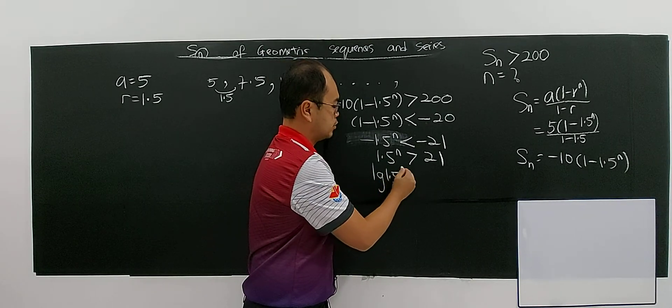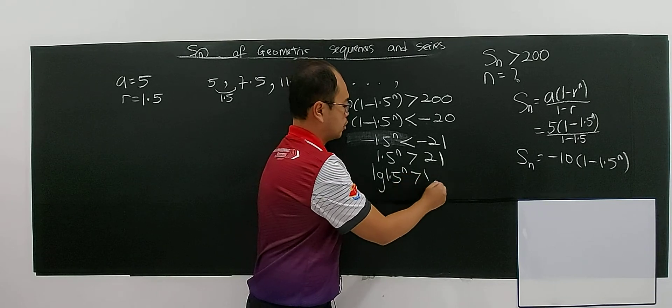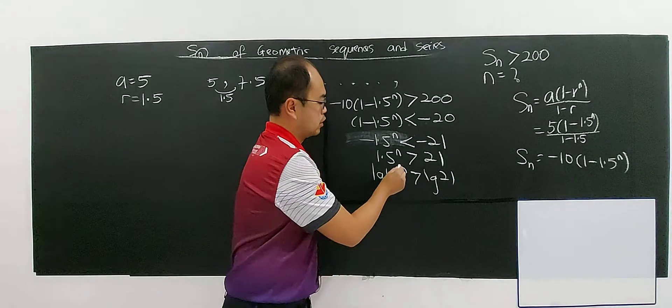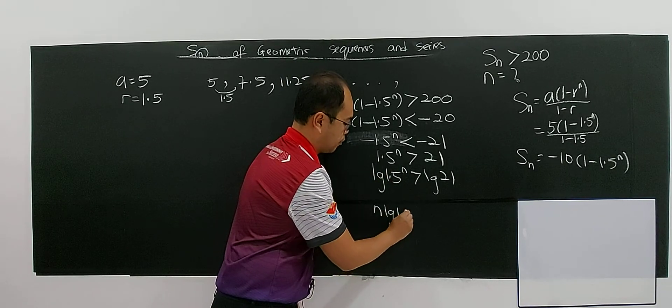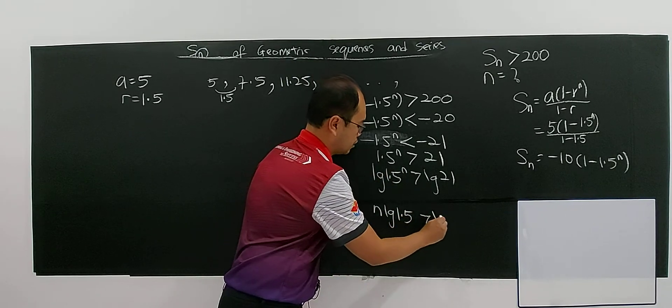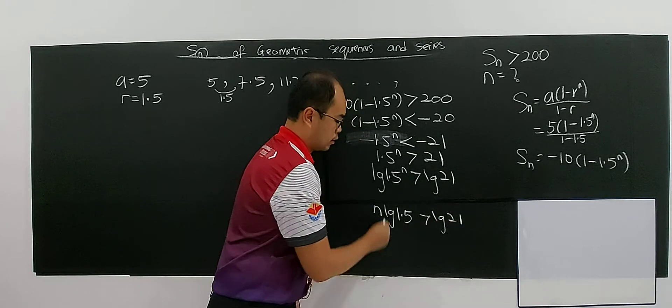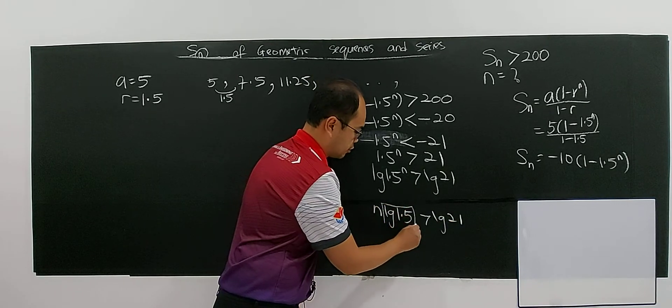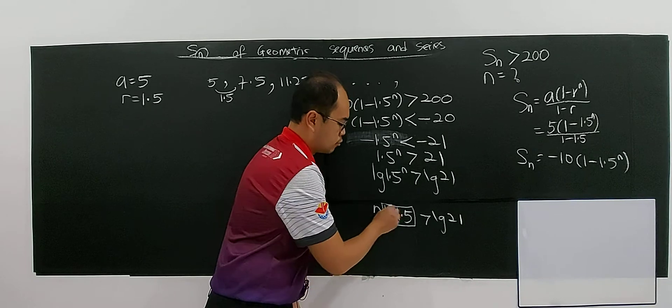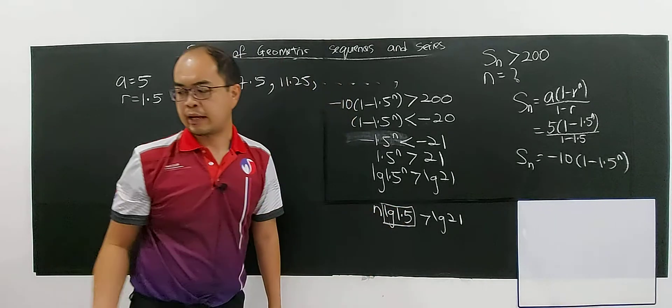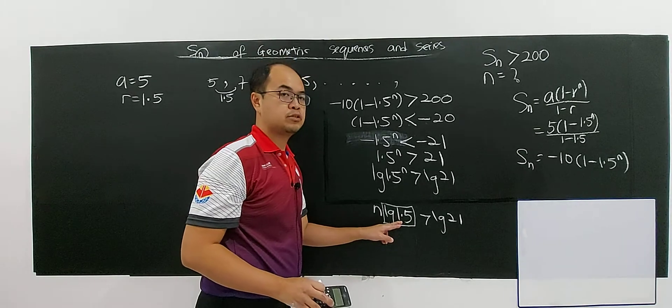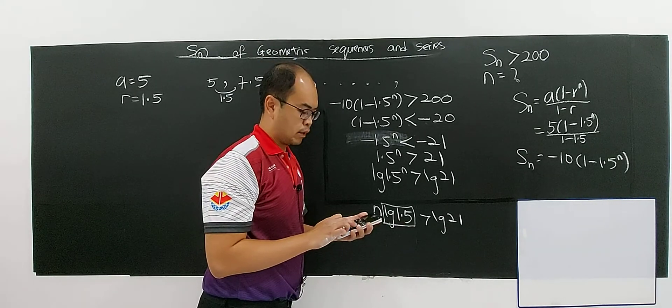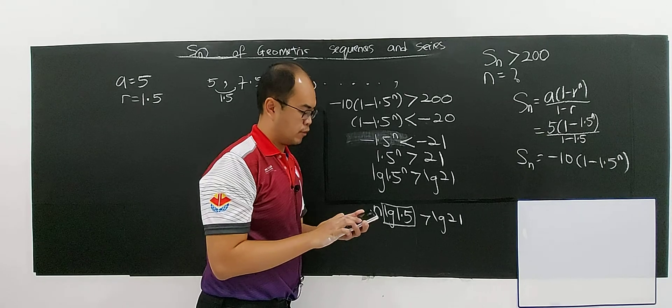You put log both sides. But you have to be careful again also because you can bring down the n log 1.5 more than log 21. The thing that you need to be cautious is you must make sure this number is not negative. Of course this is not negative because it's not in the range between 0 and 1. So but I have to find the value, log 1.5.